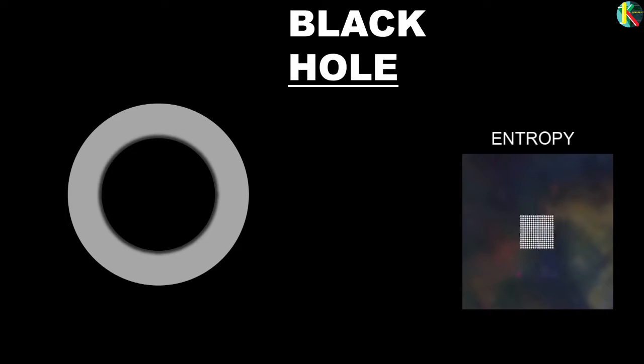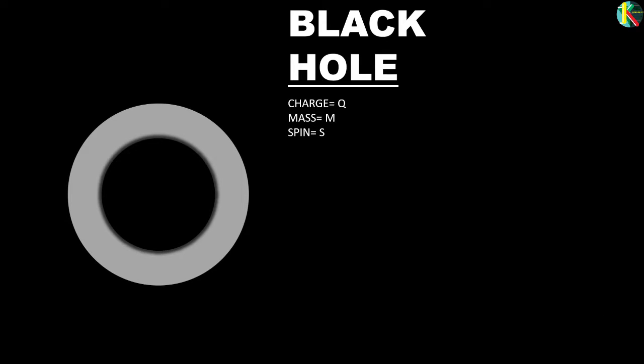At the instant the star collapses far enough to form an event horizon, it becomes a black hole. We go from knowing next to nothing about the object to knowing everything. We can easily measure its mass, spin and electric charge. And according to the no-hair theorem, that's all there is to know.